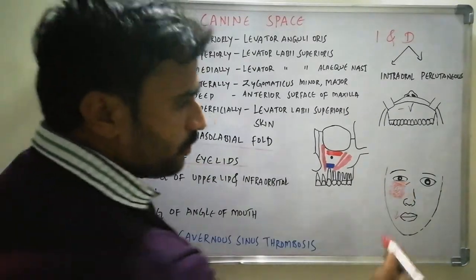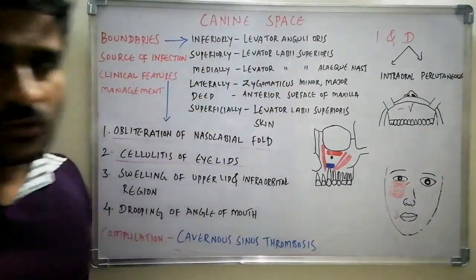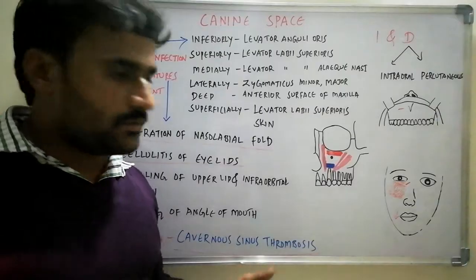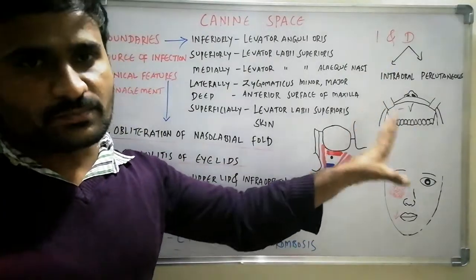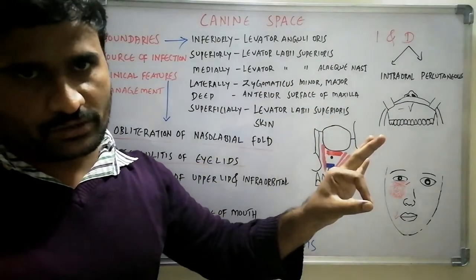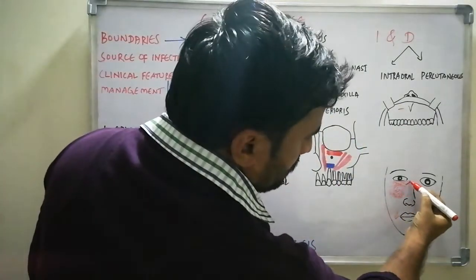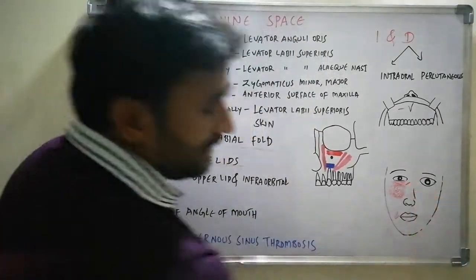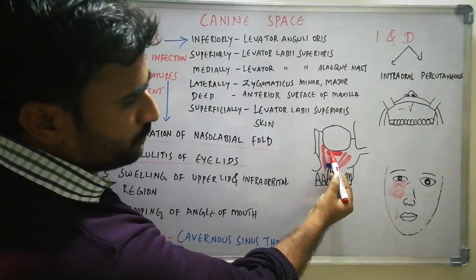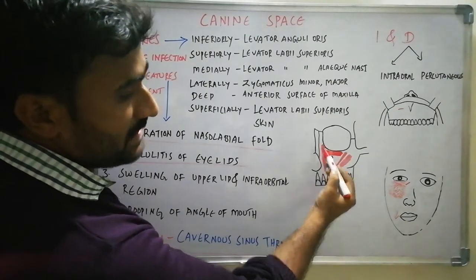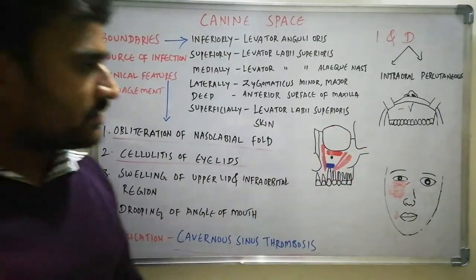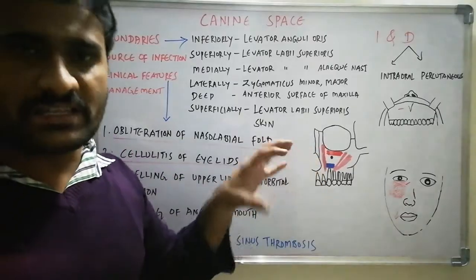The extraoral approach does not provide dependent drainage because the abscess localization is somewhat inferior to that incision point, so there may be insufficient drainage of pus. These are the two incision and drainage methods, and the intraoral approach is the most commonly recommended. The swelling at the medial angle of the eye occurs because the gap between levator labii superioris and levator labii superioris alaeque nasi allows infection to spread to the overlying skin.